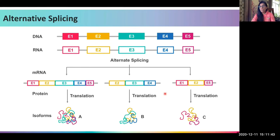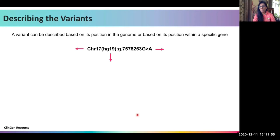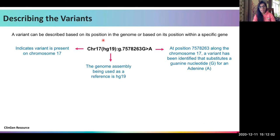Variants are described based on their position within the genome or within a specific gene. For example, chromosome 17 indicates the variant is on chromosome 17. The notation HG19 in parentheses denotes the genome assembly used as a reference — the reference genome version. The position along chromosome 17 where a substitution of G to A has occurred is then specified.